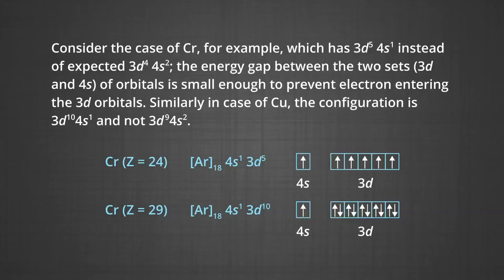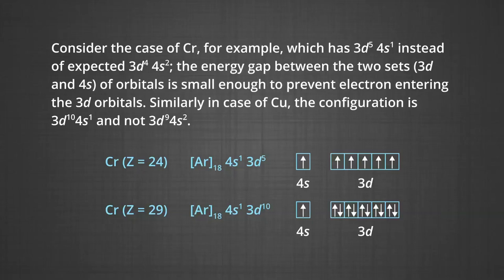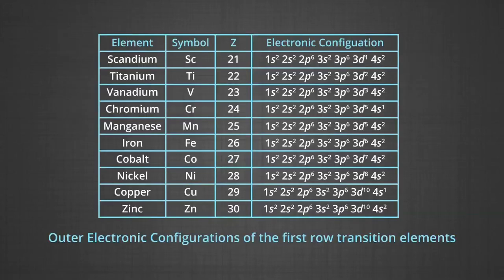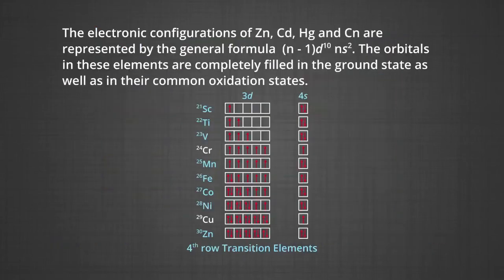A consequence of this stability factor is reflected in the electronic configurations of chromium and copper in the 3D series. Chromium has 3D⁵ 4S¹ instead of the expected 3D⁴ 4S² configuration. The energy gap between the 3D and 4S orbital sets is small enough to allow electron entry into 3D. Similarly, copper has 3D¹⁰ 4S¹ and not 3D⁹ 4S². The outer electronic configurations are given in the table. The electronic configuration of zinc, cadmium, mercury and copernicium are represented by (N-1)D¹⁰ NS².